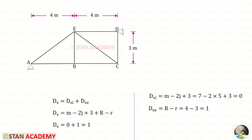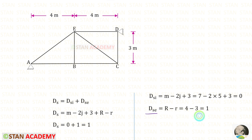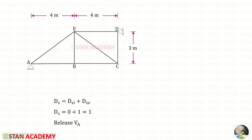Now we need to find DSC. R (capital) is the number of reactions to be found. At points A and D there are hinged supports, and in a hinged support there will be 2 reactions each, so 2 plus 2 equals 4. Small r is the number of equilibrium conditions available — there are 3: Sigma V = 0, Sigma H = 0, and Sigma M = 0. So r is 3, and for DSC we will get 1. This truss has only external degree of indeterminacy of 1.